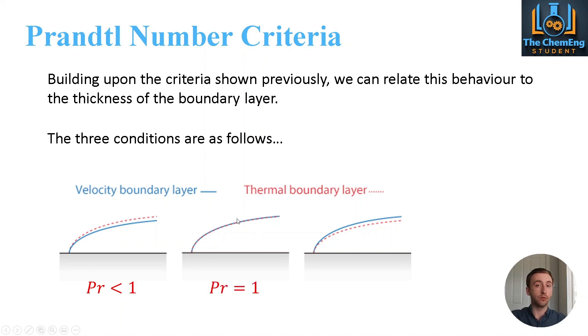Whereas if Prandtl is equal to 1, then that tells us that the ratio between the thermal and the velocity boundary layers are exactly the same. They lie precisely on the same axis with the same gradient at every point. And if we have a Prandtl that's greater than 1, then you can see that the velocity boundary layer is above that of the thermal boundary layer. That's a graphical representation of the boundary layers governed by Prandtl number which is very important for when you look at heat transfer effects.